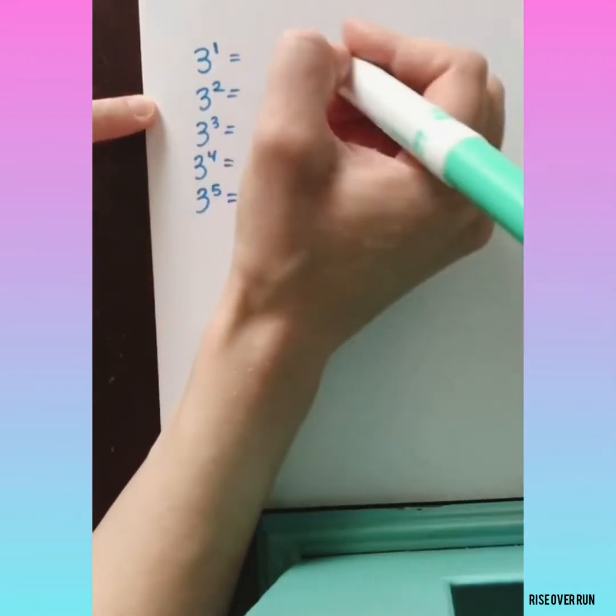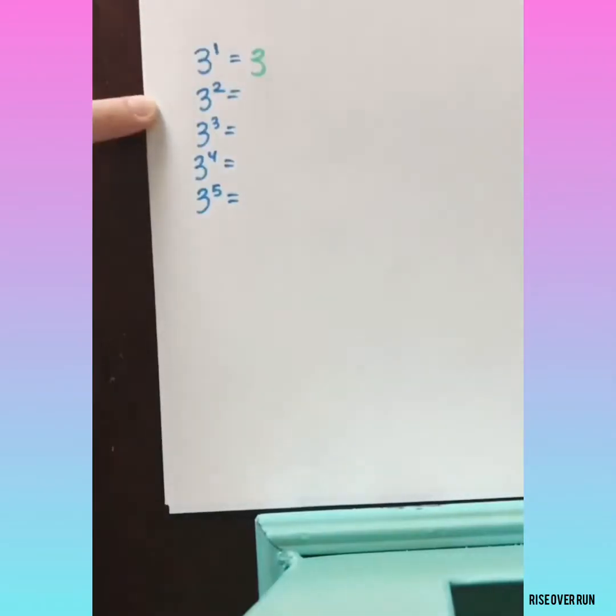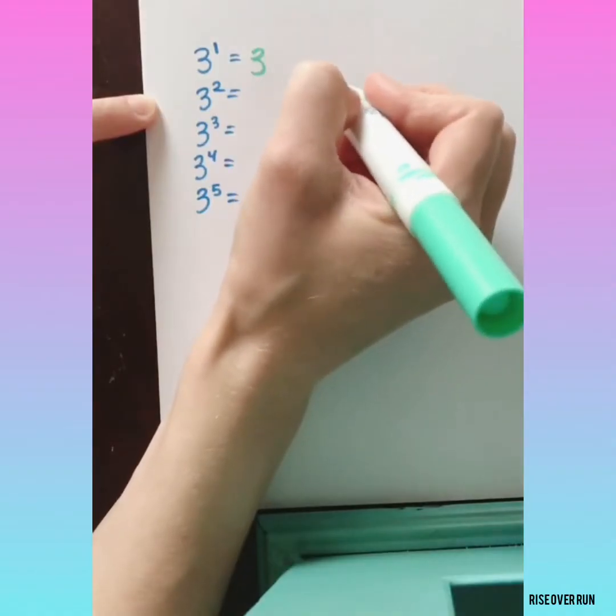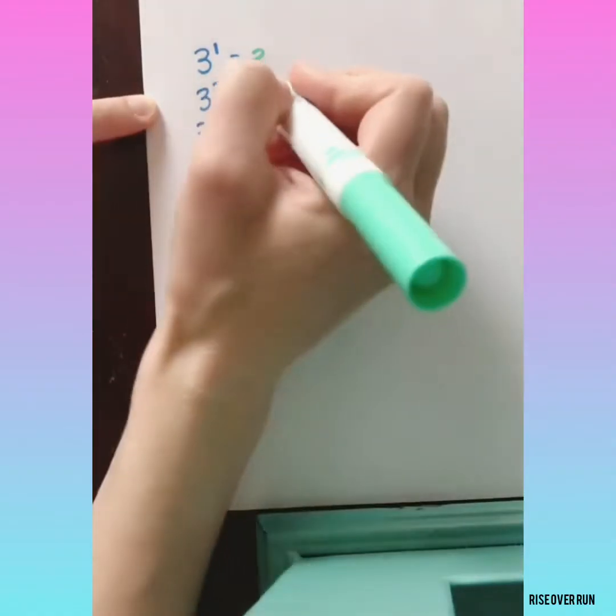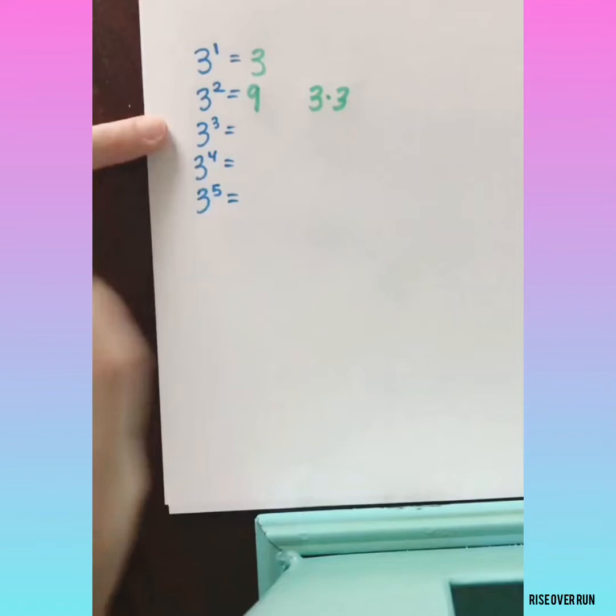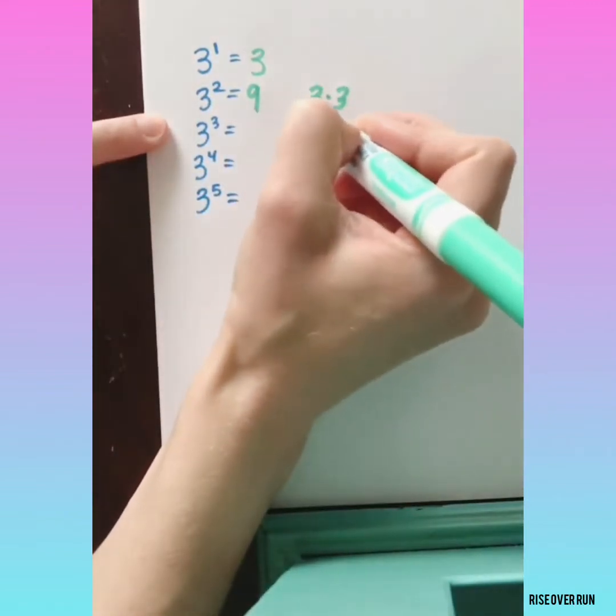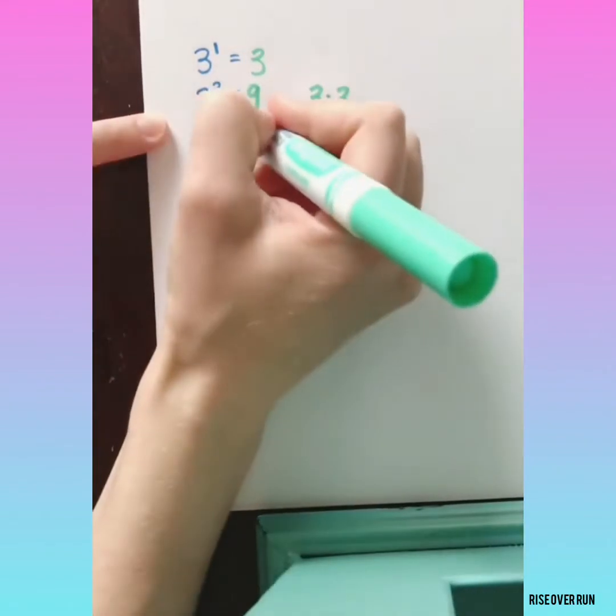3 to the first power, that's just 3. 3 to the second power, that means 3 times 3, so that's 9. 3 to the third power means 3 times 3 times 3, which is 27.